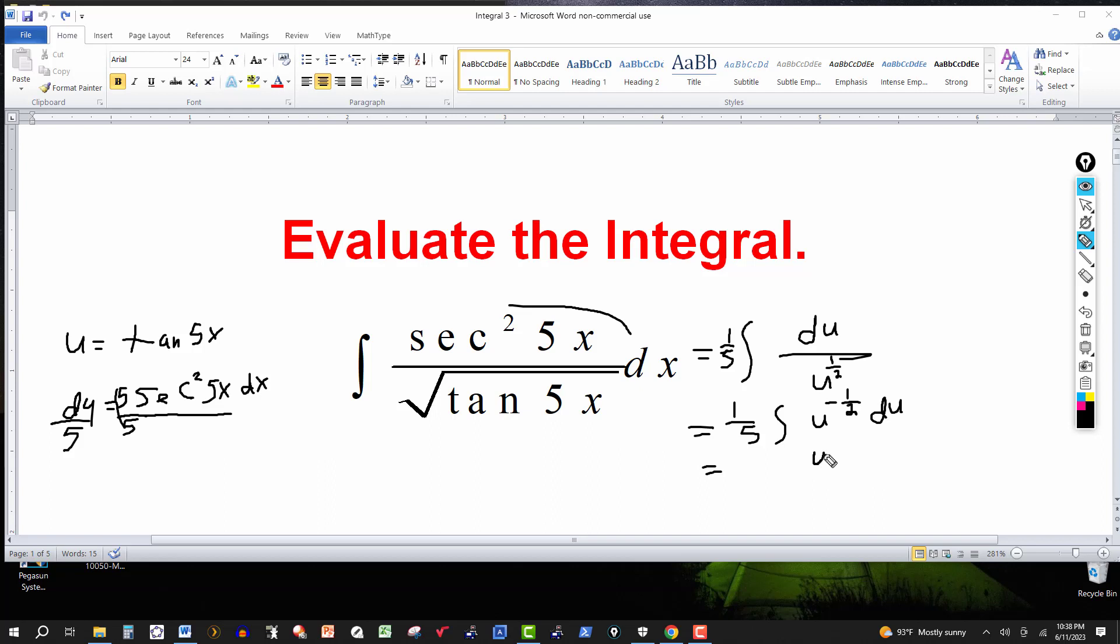Negative 1/2, and we get 1/2. And then we divide the coefficient 1/5th by 1/2. And this will give us 2/5ths. And then it's the constant of integration. Plus C.